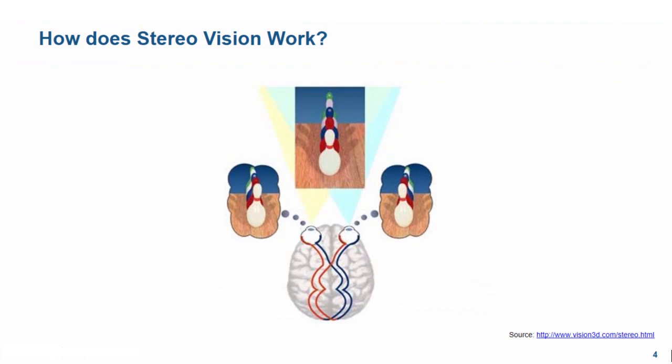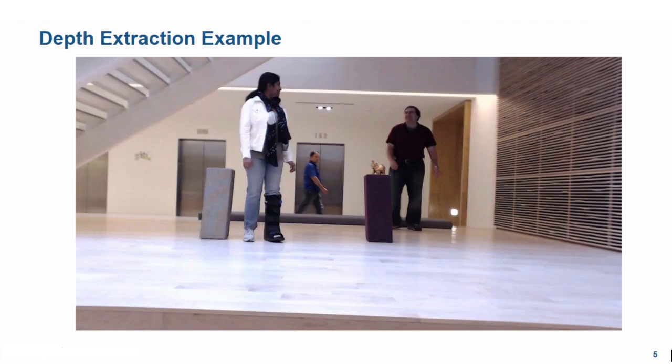Humans have two eyes side by side with a little distance between them, which provides each eye with a different angle of the same viewing area. We can verify this by holding a finger in front of our face and alternating opening and closing one eye at a time. The brain processes the images from both eyes, combining them into a 3D image with depth information. StereoVision cameras use the same principle to estimate depth.